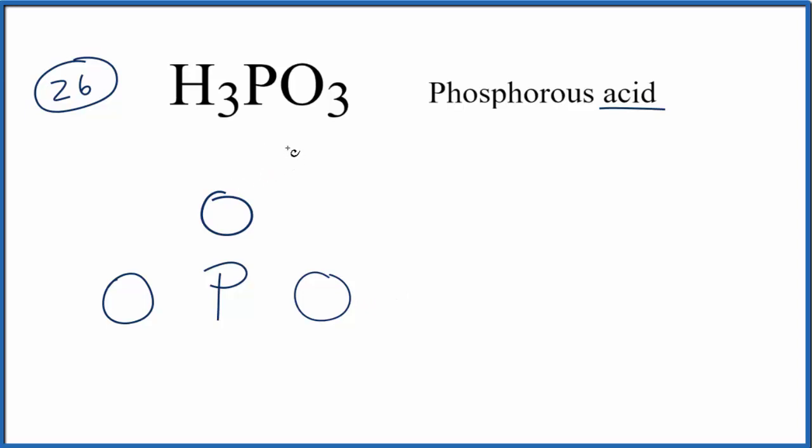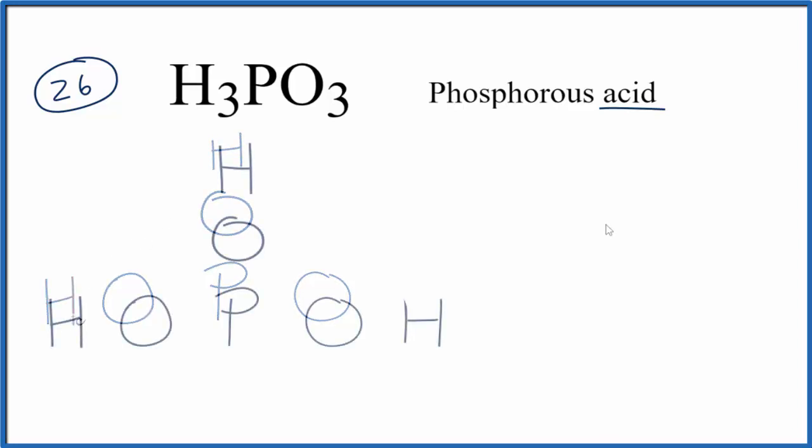I also like to put hydrogens on the outside when I can, so I'm just going to put these hydrogen atoms here on the outside. At this point we have our skeleton Lewis structure and we can start putting electrons between atoms to form chemical bonds.